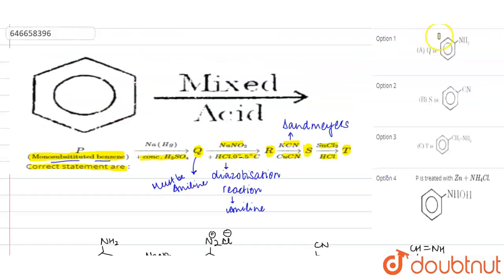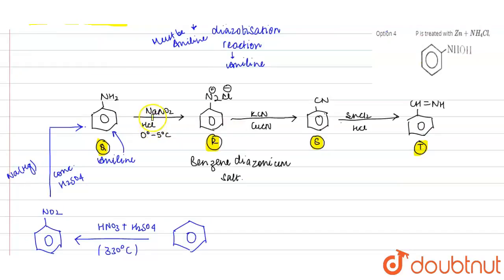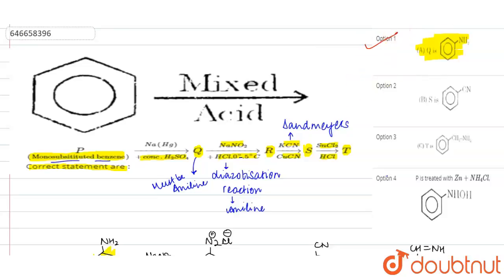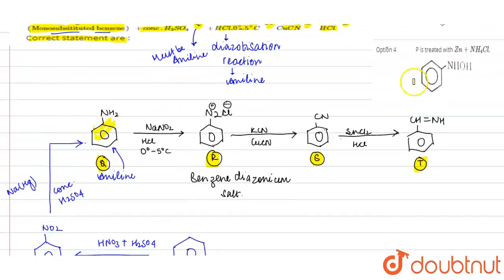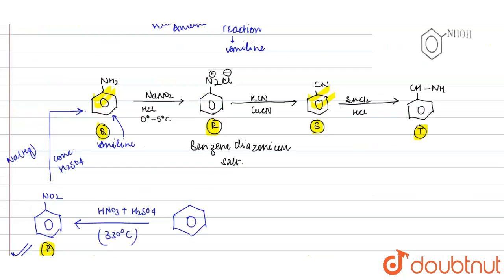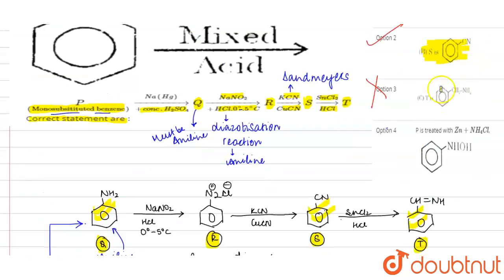Now checking the options: Option 1 says Q is aniline — which is correct, our Q product is aniline. Option 2 says S is cyanobenzene — which is also correct. Option 3 says T is a primary amine compound — this is incorrect, because that would be the fully reduced product. Here we are getting the partially reduced product, so T is not a primary amine.